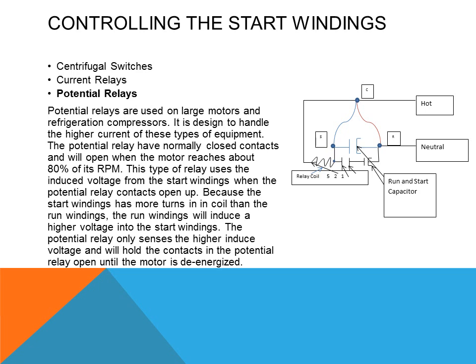Potential relays are used for larger motors and compressors and are designed to handle higher current. Potential relays are sometimes called voltage relays because they use the inductive voltage from the start windings to generate a voltage higher than the applied voltage. This inductance sends voltage to the relay coil, which only senses the higher inductive voltage. The potential relay has a normally closed set of contacts that will open once the inductance increases in the start winding, and will remain open until the compressor is de-energized.